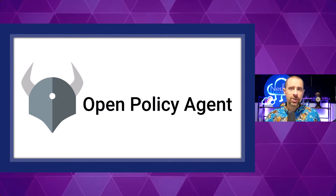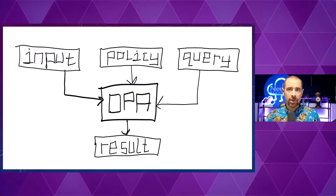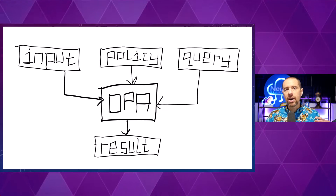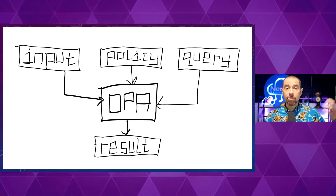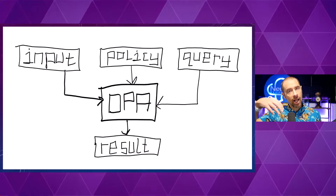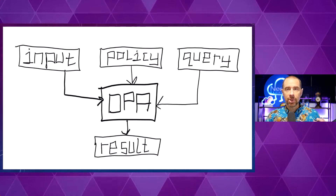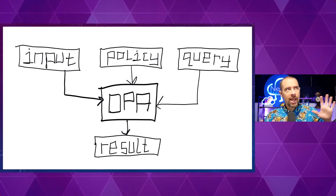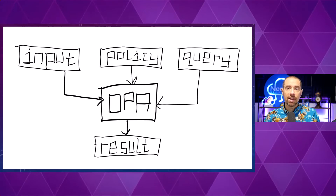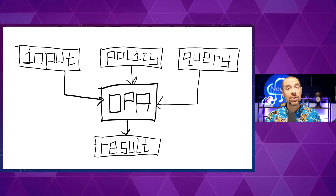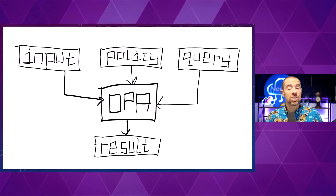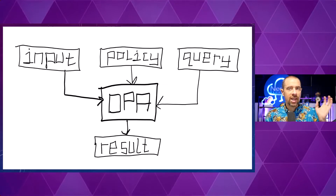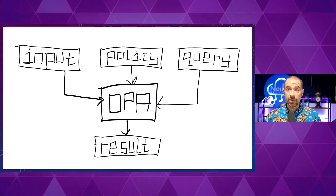So let's talk about how OPA works at a very high level. Think of OPA as the engine. You're going to have some input data going into OPA. You're going to have some policies that you want to evaluate that input data against, and then a query that looks at the results of the policy evaluation and gleans some information — and that is the result that gets published out of OPA. So it's this combination of the input, the policy, and the query, and then you get the result out.